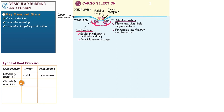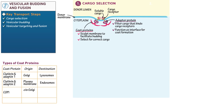Write that clathrin proteins paired with adaptin-2 originate in the plasma membrane and are involved in vesicular transport to endosomes. Indicate that COP1 proteins originate in the cis-Golgi and are involved in transport to the ER; they also facilitate transport from later cisternal stacks in the Golgi to earlier ones. Finally, indicate that COP2 proteins originate in the ER and facilitate transport to the cis-Golgi.